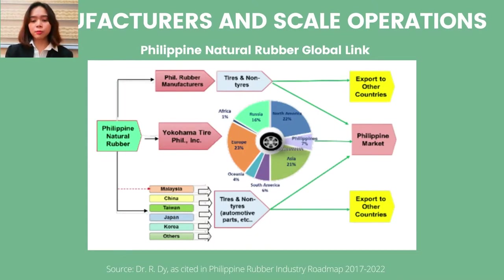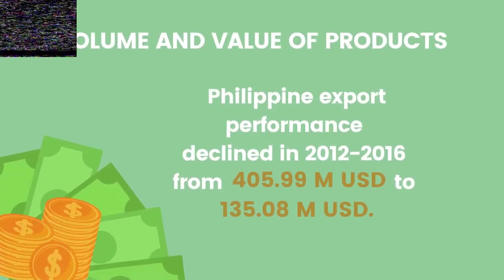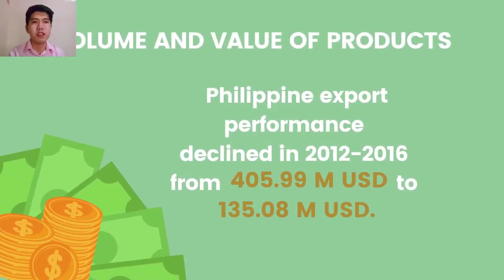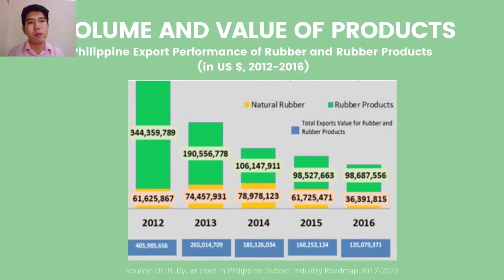The Philippine Natural Rubber Global Link shows that natural rubber in the Philippines either goes to the local market — which includes Philippine rubber manufacturers and Yokohama Tire Philippines Inc. — or to other countries. Rubber manufacturers in the Philippines produce both tire and non-tire products sold in domestic and international markets. Export performance in terms of natural rubber and rubber-based products declined from 2012 to 2016, from US$405.99 million to US$135.08 million, largely due to the decreasing value of rubber-based products like tires.